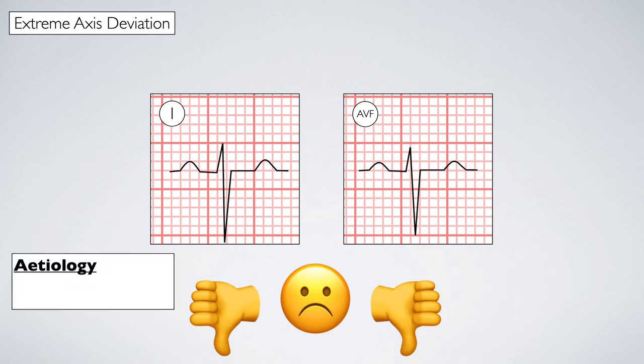Extreme axis deviation can be caused by inappropriately placed ECG leads, but can also be caused by ventricular tachycardia.